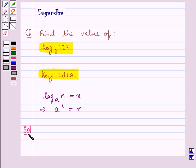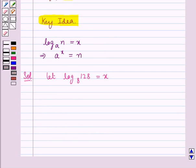Let's proceed with the solution now. We suppose let log of 128 to the base 8 be equal to x. So from the key idea we have that this means 8 to the power of x is equal to 128.